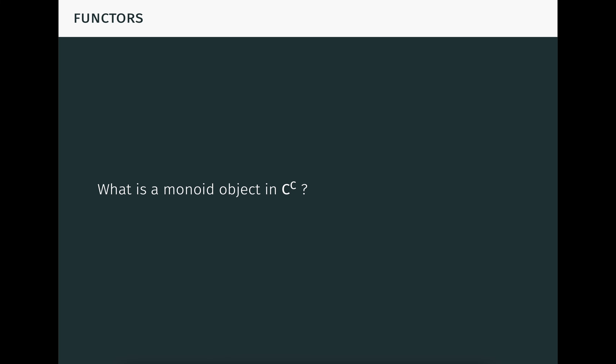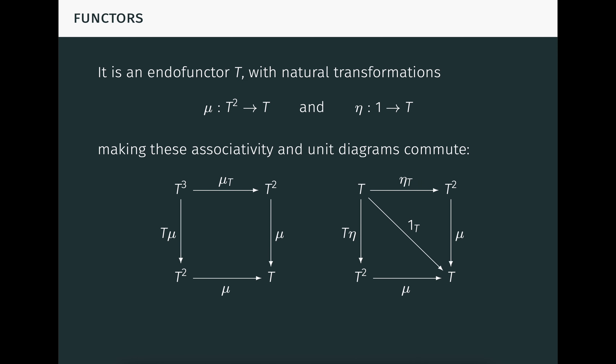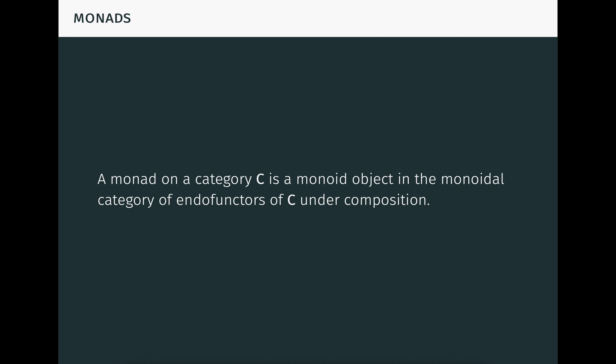Now, what is a monoid object in C to C? It's an endofunctor T, with two natural transformations mu and eta. Mu maps from T squared to T, since our monoidal product is functor composition. Eta maps from the identity functor 1 to T. The natural transformations make the associativity and unit diagrams commute. This should all look very familiar from the last video — that's because it's just a monad. This means that a monad on a category C is a monoid object in the monoidal category of endofunctors of C under composition. The cool thing here is that a monad, which at first sight might have looked a little strange, is just an instance of one of the most familiar types of objects in mathematics: a monoid.